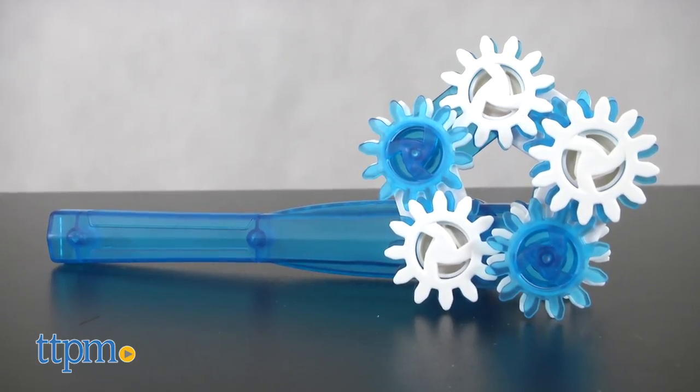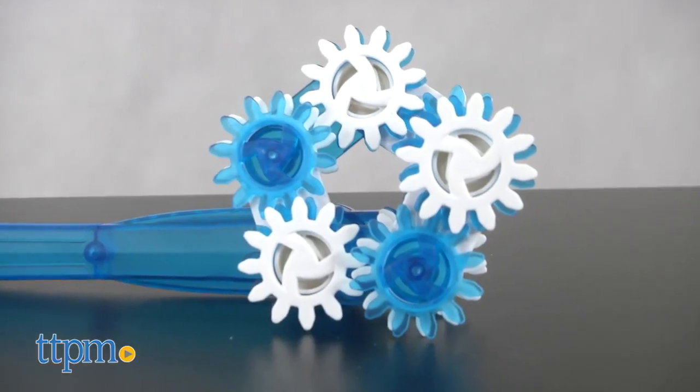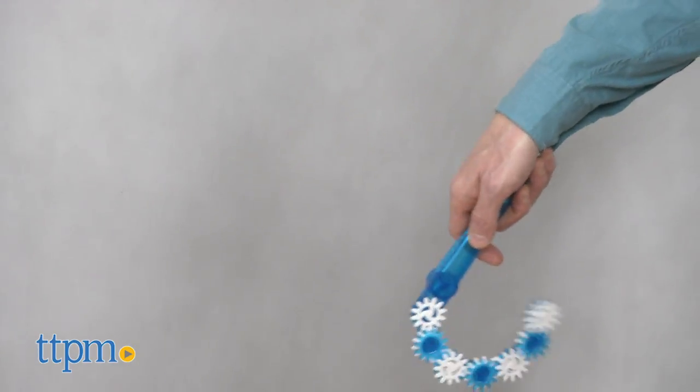Tailspin consists of a handle and seven groups of gears. Flick your wrist and away it spins.